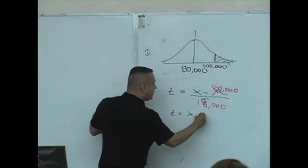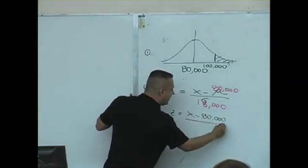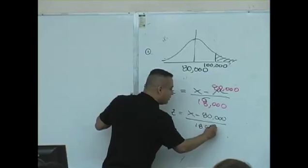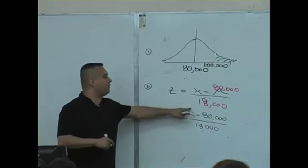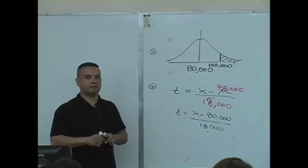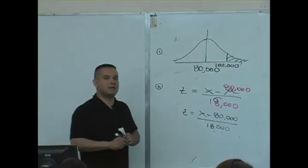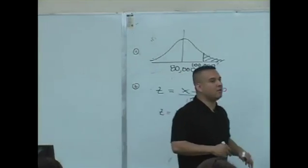Convert. So x minus 80,000 divided by that 18,000. So if you tell me what x is, I can convert it to a z value. Do you guys want to know what x is?